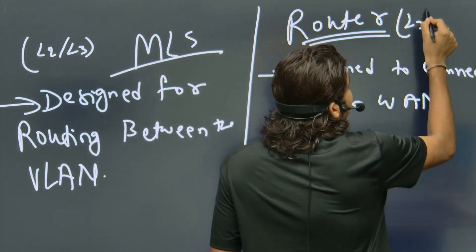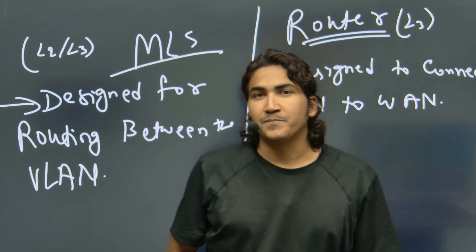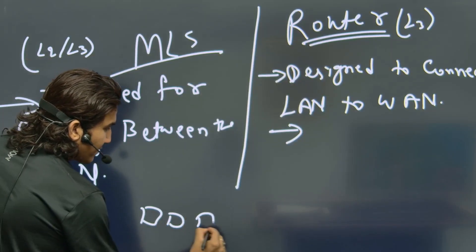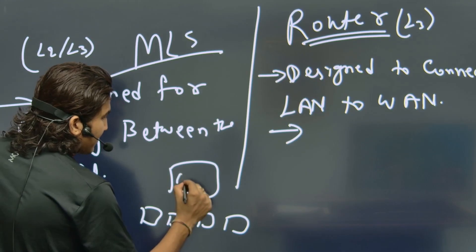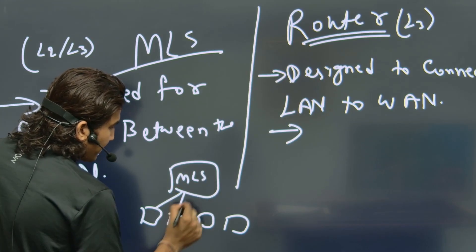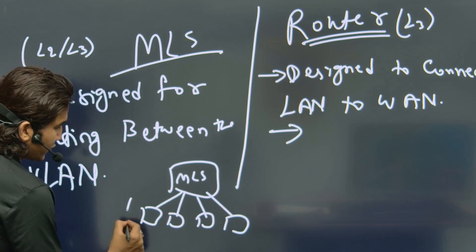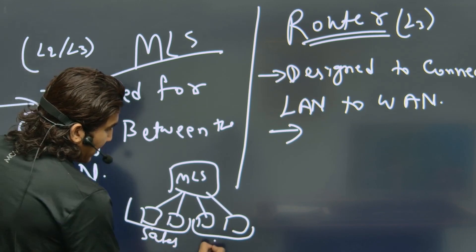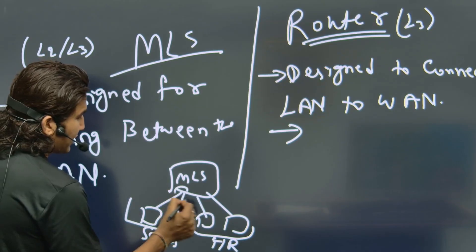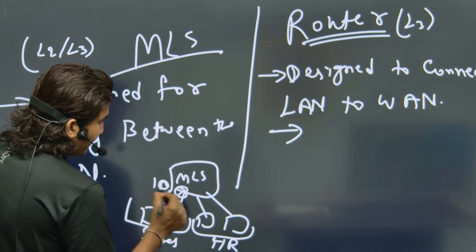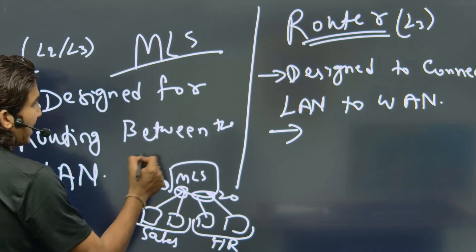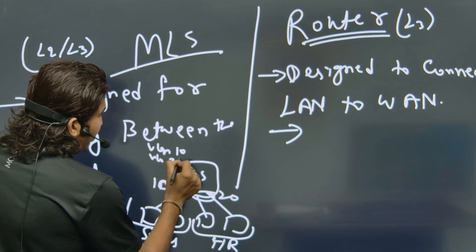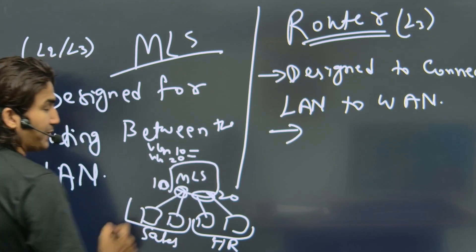MLS can perform L2 as well as L3 forwarding. In the scenario described: employees are connected to one MLS. Two PCs belong to Sales department and two belong to HR. The Sales interfaces are put in VLAN 10 and HR interfaces in VLAN 20. SVIs are created — one IP for VLAN 10 and one IP for VLAN 20.